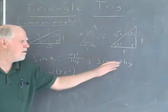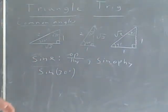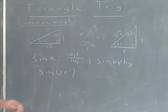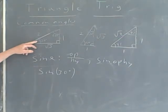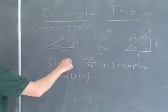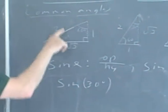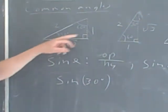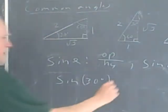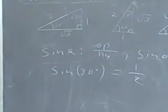I'm interested in the sine of 30 degrees, so I have a 30-60-90 triangle here. I take my 30 degrees, I drop my altitude, and it doesn't hurt to call this side 1, this side 2, and this side the square root of 3. Since it's the opposite over the hypotenuse, the sine of 30 degrees is 1/2.